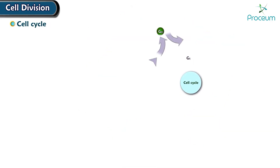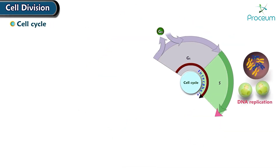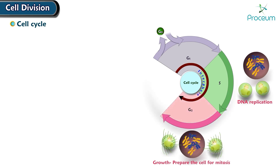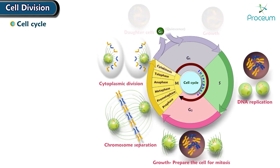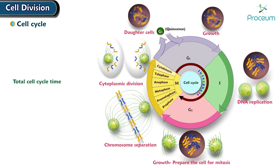Cell cycle. It is the ordered sequence of events that occur in a cell in preparation for cell division to produce two daughter cells. The total cell cycle time for a typical rapidly dividing human cell is 24 hours, and the minimum time is 12 hours.